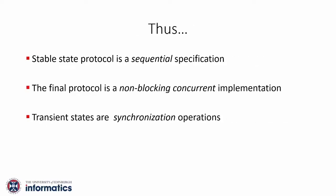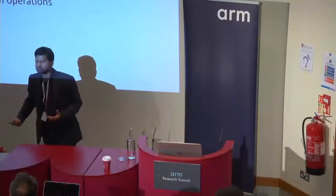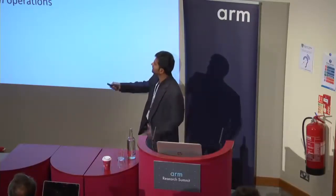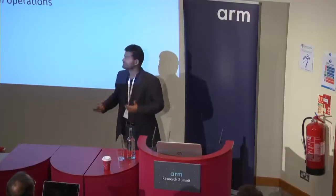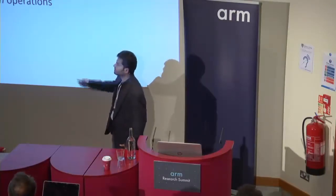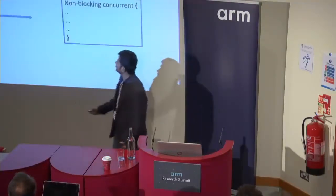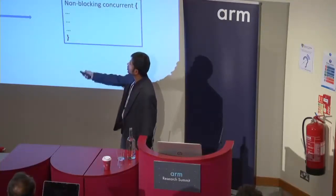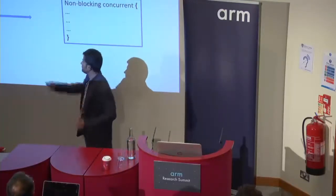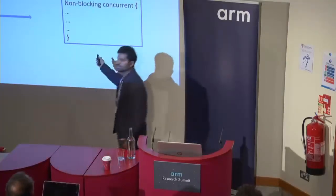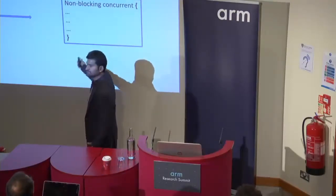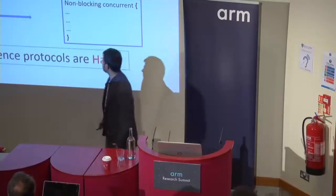As an analogy, a stable state protocol or an atomic protocol is like a sequential specification. The final high-performance concurrent protocol is like a non-blocking concurrent implementation, and transient states are really like non-blocking synchronization operations. Therefore, this task of converting an atomic stable state protocol into a highly concurrent protocol is equivalent to converting a sequential object into a non-blocking concurrent object. There is a separate community for dealing with all this complexity — this is no easy task.